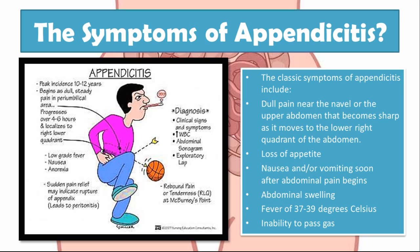If the appendix ruptures — meaning it bursts open and all that content spills into the peritoneal cavity — there will be a sense of sudden pain relief. This is actually a very alarming sign. When the pain suddenly disappears and the patient feels relief, there is actually a much more problematic underlying process occurring. The last point is rebound pain or tenderness at McBurney's point, which I'll explain in the next slide.